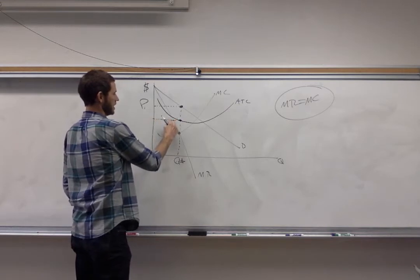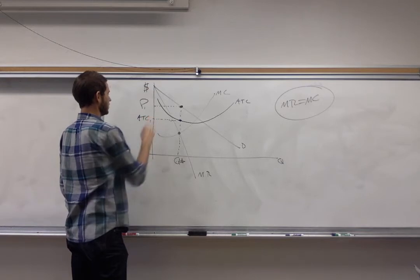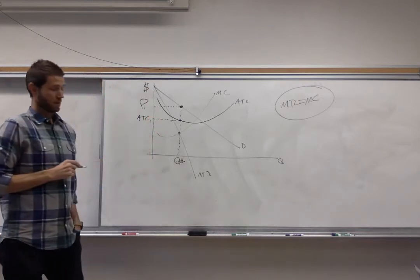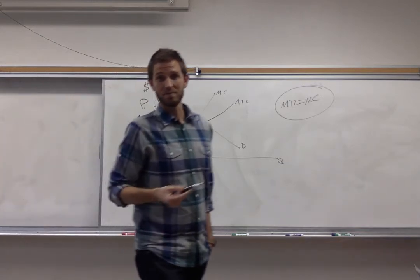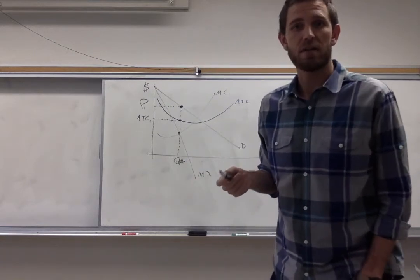That's supposed to be a dashed line right there. Let's call that ATC1. So now we're almost done. We have almost all the elements that we need. We have all the elements that we need for identifying profit.